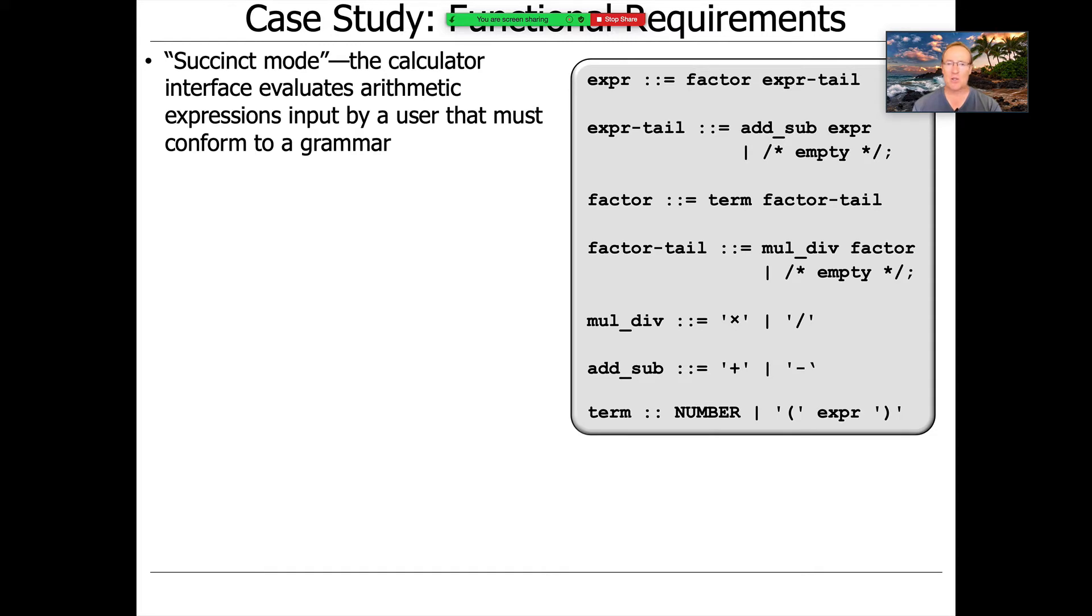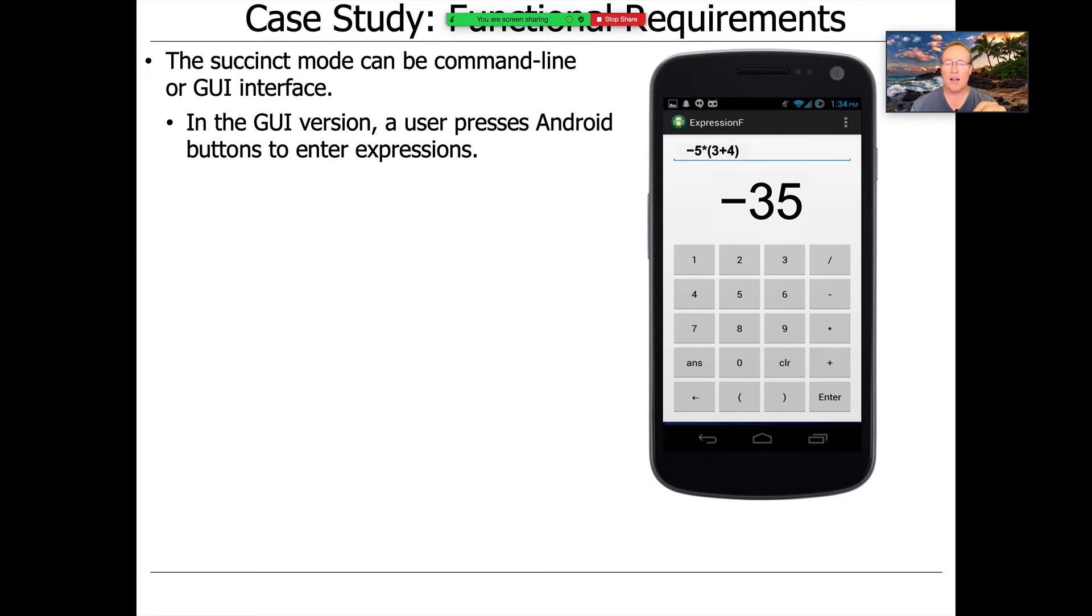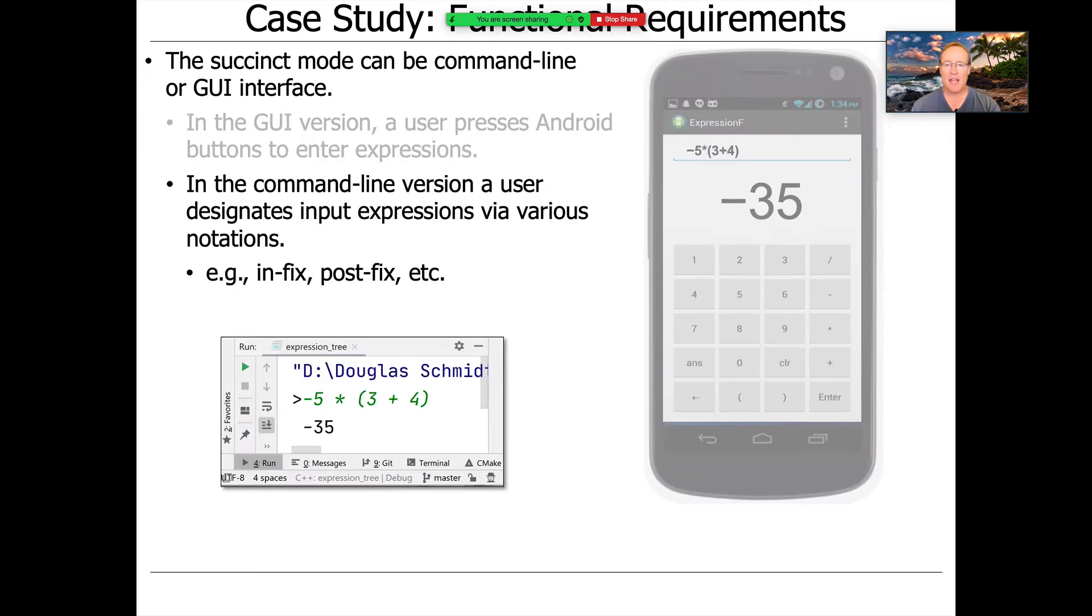Which you see here described using something called Bacchus-Naur format. But there's also different ways of doing this. So there's a GUI version running on Android where you have a user interface that looks like this, in fact, is this. And then you can go ahead and click buttons and it'll tell you what the input expression is. And then when you hit enter, it'll give you the result. And then there's also a command line version that runs in CLion or runs on the command line. And in that case, you can type the expressions in in various notations, most commonly in infix notation.